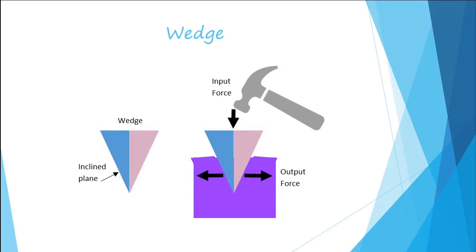The hammer is the input force. It doesn't have to be a hammer. If you had a wedge and you were stepping on it and stomping on it, that would also be the input force. The inclined planes, which are together, push out with output force and split whatever it is in half.